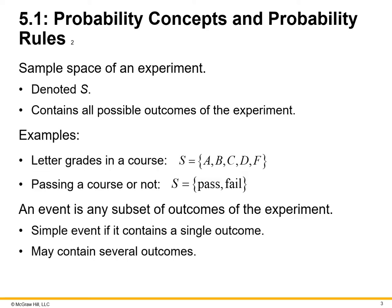For example, sample space of an experiment, denoted as S, contains all possible outcomes of the experiment. For example, letter grades in a course. Well, normally in a class, you can have A, B, C, D, and F. Passing a course or not equals S equals pass or fail. An event is any subset of outcomes of the experiment. A simple event, if it contains a single outcome, may contain several outcomes.